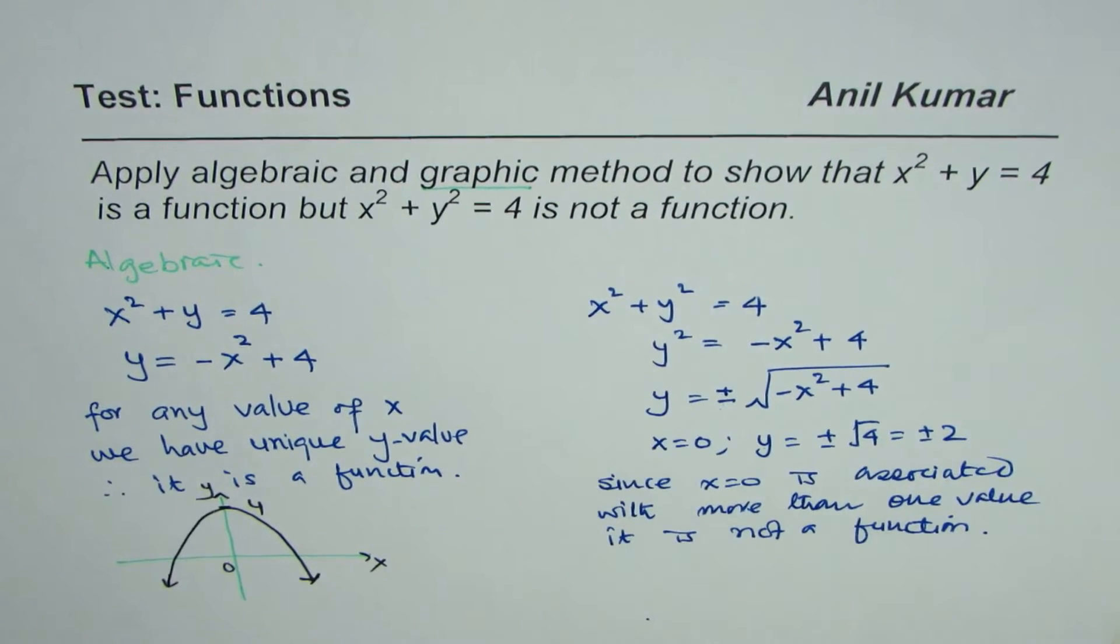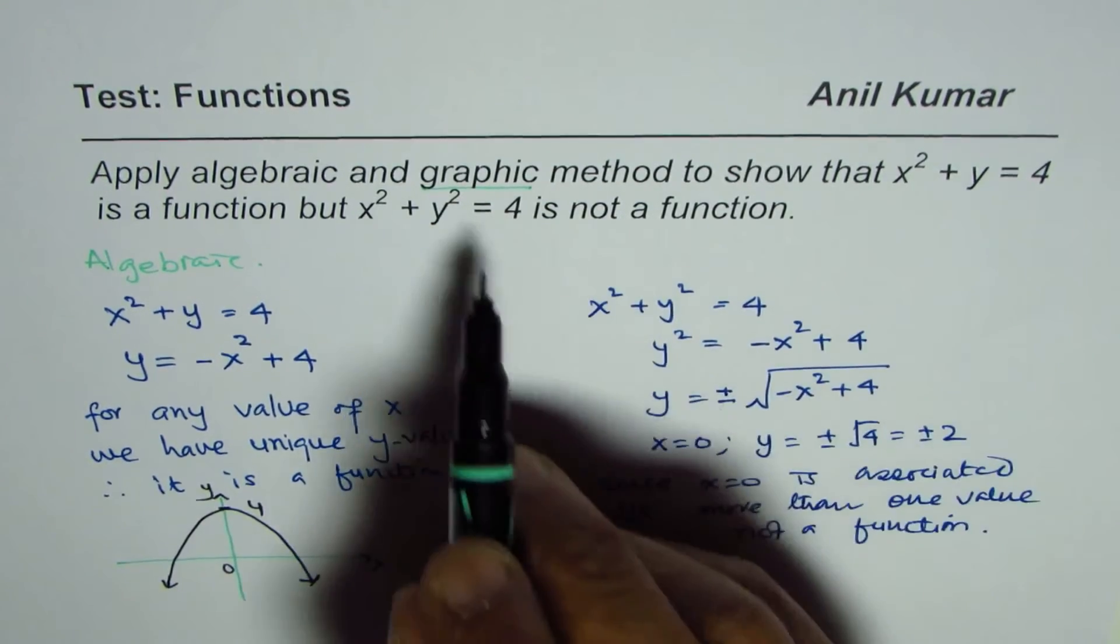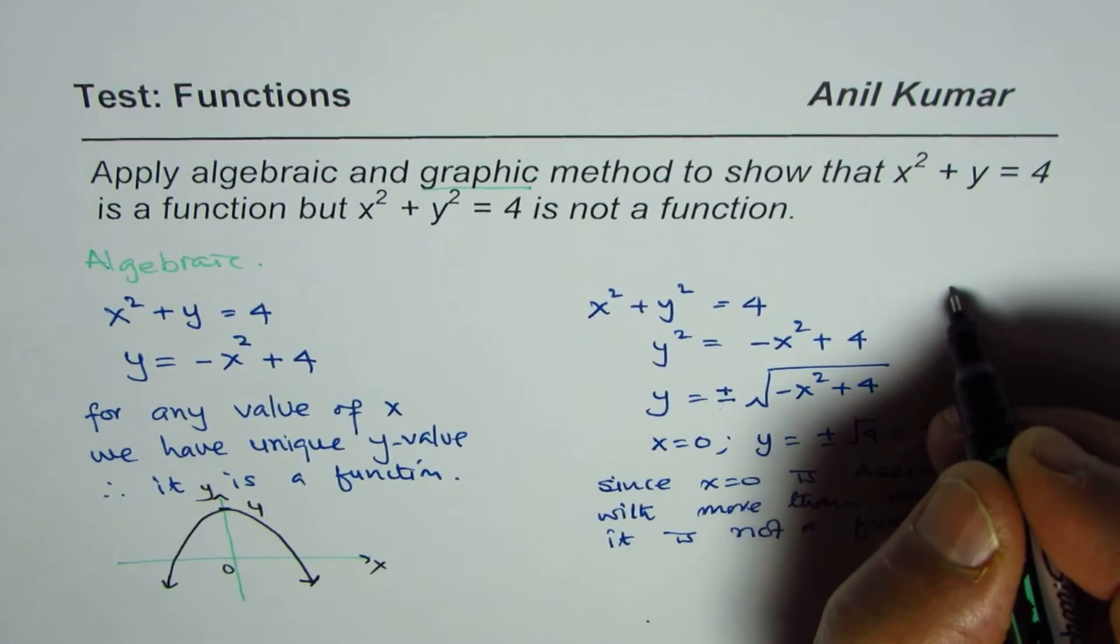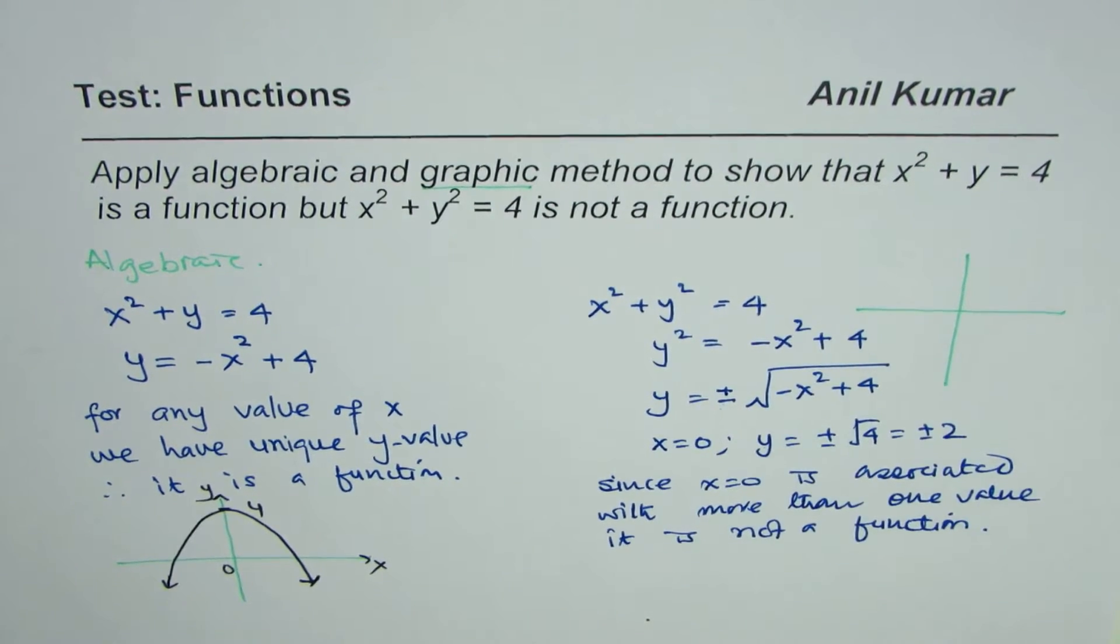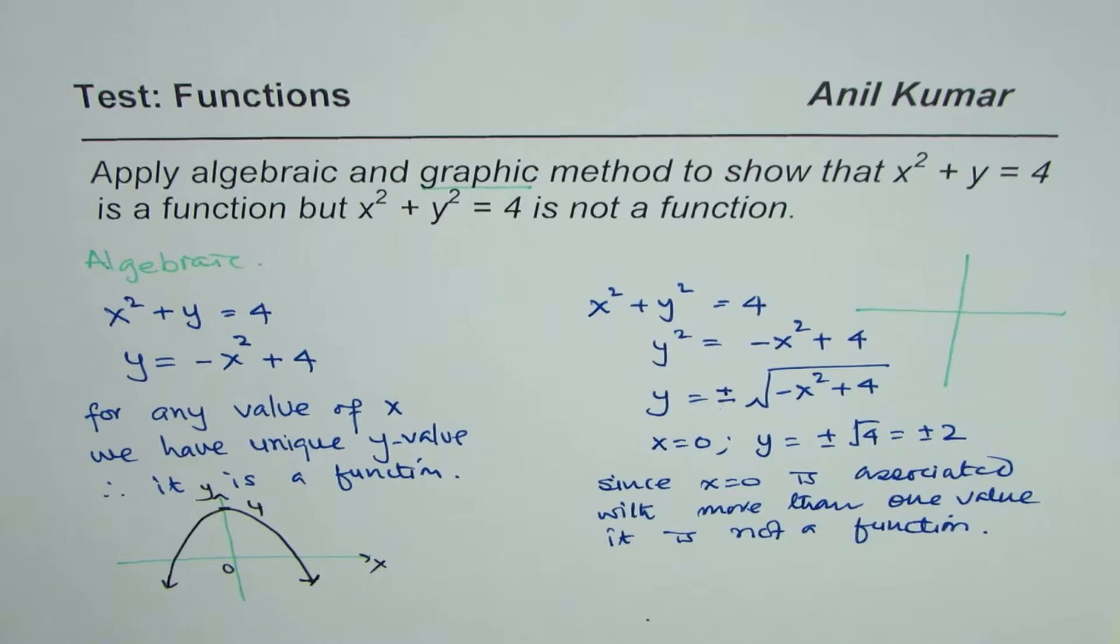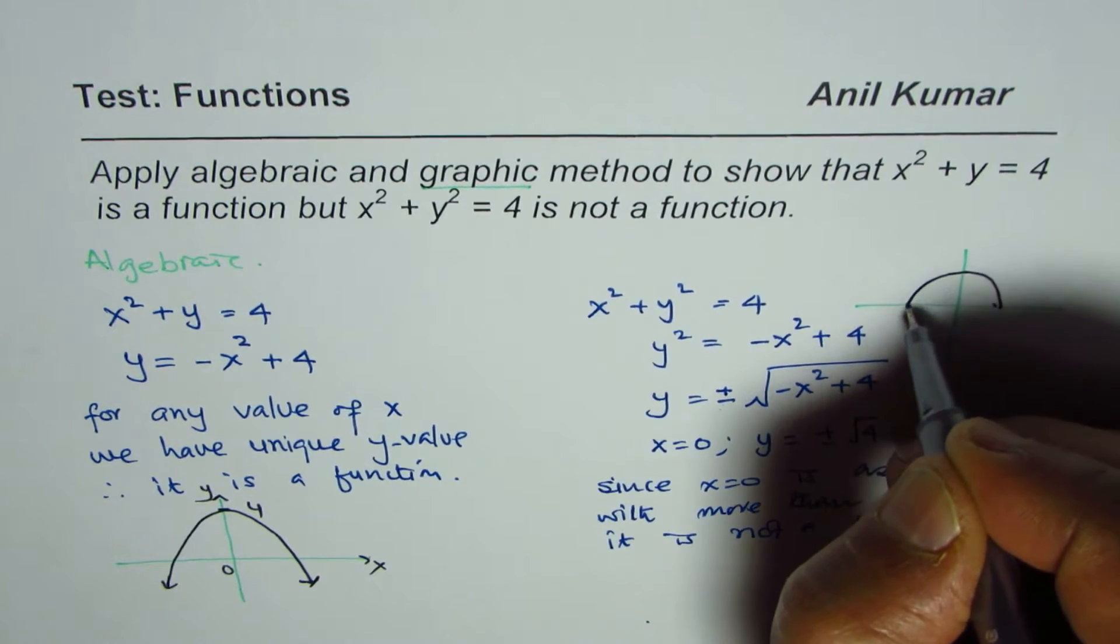Let's look into the second equation which is x² + y² = 4. Now that is equation of a circle. This is the equation of a circle with radius of 2, so it is kind of like this.